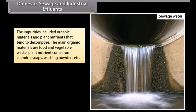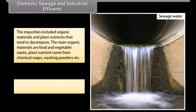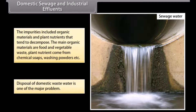The main organic materials are food and vegetable waste. Plant nutrients come from chemical soaps, washing powders, etc. Disposal of domestic waste water is one of the major problems.